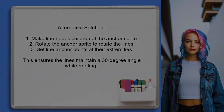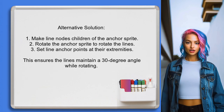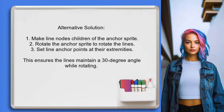An alternative approach suggested by another user is to make the line nodes children of the anchor sprite. This way, when you rotate the anchor sprite, the lines will rotate with it automatically. Just remember to set the anchor points of the lines at their extremities instead of the center for proper alignment.